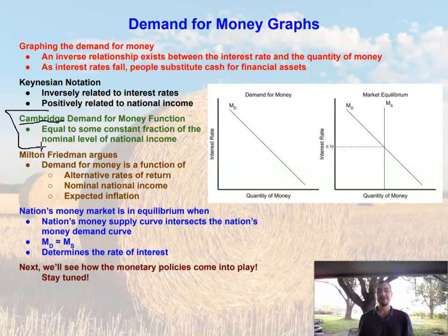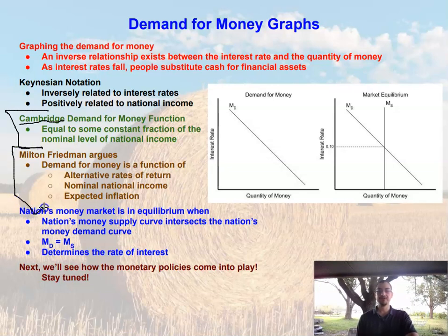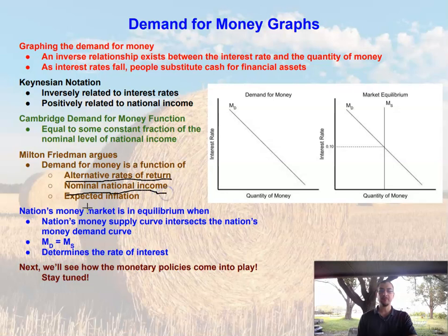According to the Cambridge approach, it doesn't matter what the interest rate or national income is — the demand for money is always some constant fraction of national income, whether that's ten percent or seventy percent. Then we get to Milton Friedman, who argues that demand for money is a function of alternative rates of return, national income, and expected inflation. If expected inflation is rising, we'll actually hold less cash.